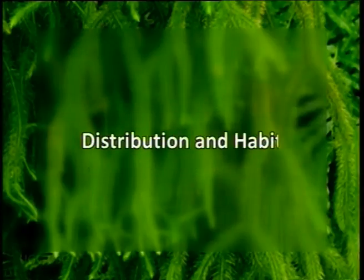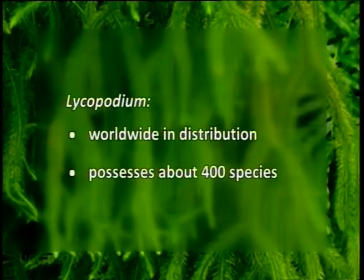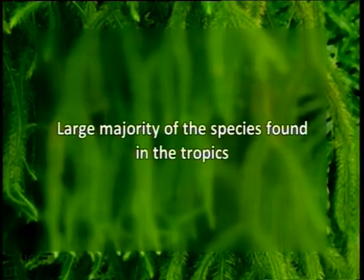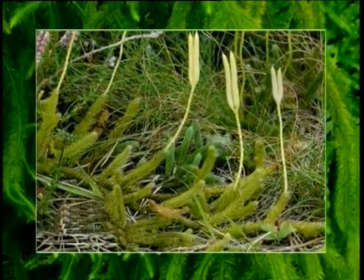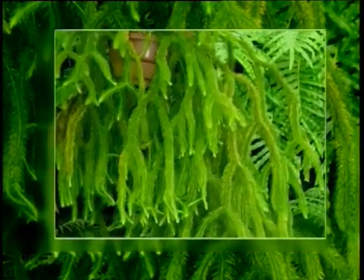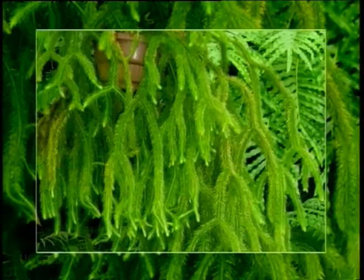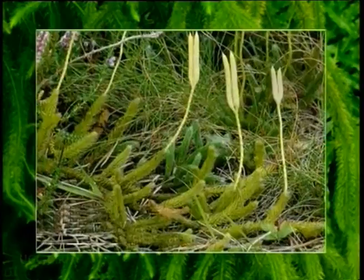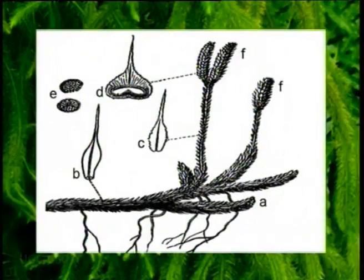Lycopodium is worldwide in distribution and possesses about 400 species. A large majority of the species are found in the tropics. Plants are slender, herbaceous, or shrubby sporophytes with a wide range in habitat. In the tropics, there are mainly pendulous epiphytes, and the temperate ones are prostrate trailing forms with upright branches, while others are erect plants. All species have a branching rhizome creeping above or below the surface of the soil from which arise aerial branches.